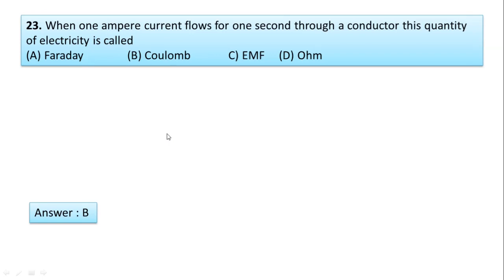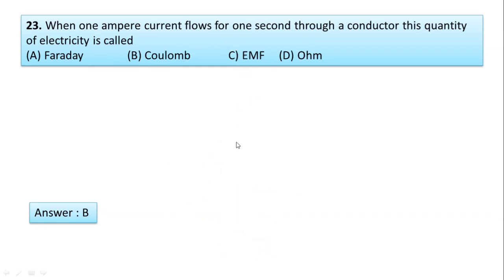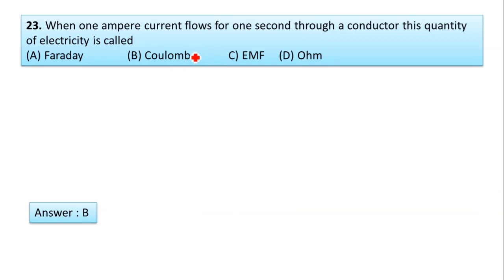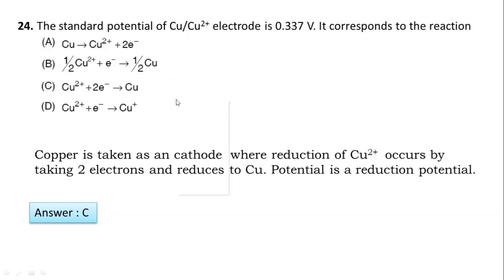Question 23: When one ampere current flows for one second through a conductor, this quantity of electricity is called a coulomb. It is not EMF, not ohm, and not a faraday. When one ampere current flows for one second through a conductor, the electricity is measured in coulombs. Answer B is correct.